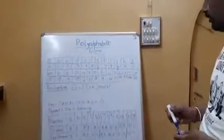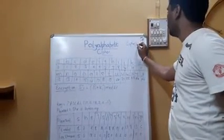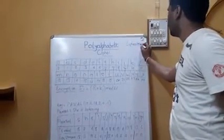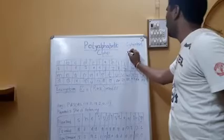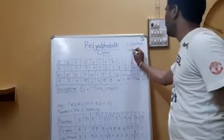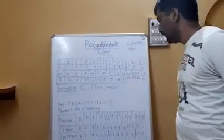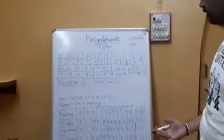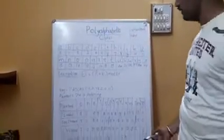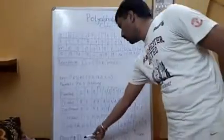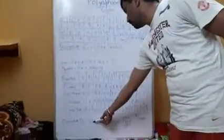Now we will see decryption in polyalphabetic cipher. For decryption, we are given the ciphertext, the key, and we use mod 26. The decryption formula is: DI equals (CI minus KI) mod 26.